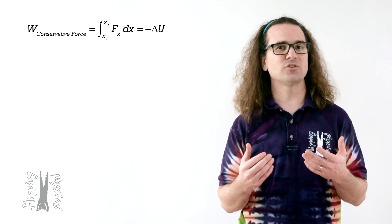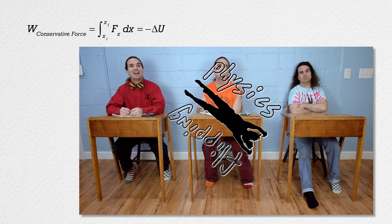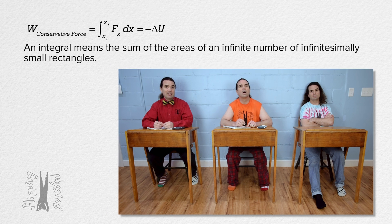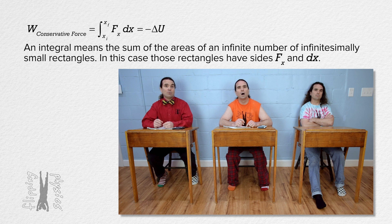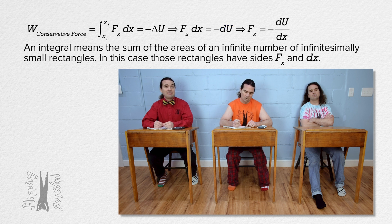Billy, please rearrange that equation to make it into a derivative instead of an integral. Remember that the integral means the sum of the areas of an infinite number of infinitesimally small rectangles, in this case with sides F_x and dx. We can instead look at the area of only one of those infinitesimally small rectangles, which is just height F_x times width dx. Then we would also be looking at an infinitesimally small change in potential energy, dU. We can then rearrange that equation to show that the component of a conservative force in the x direction equals the negative of the derivative with respect to x position of the potential energy associated with that force.